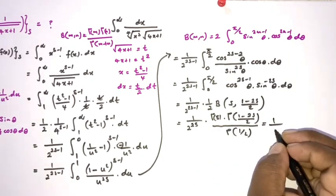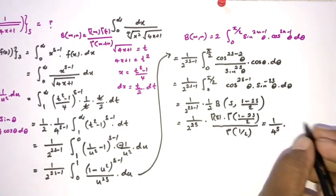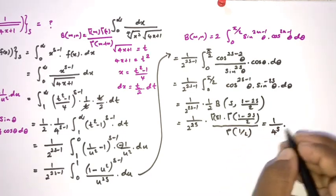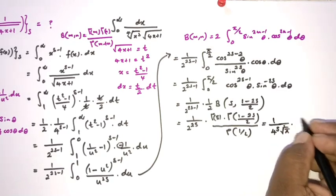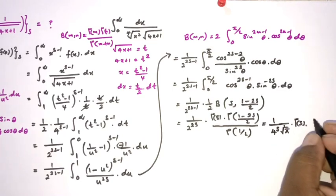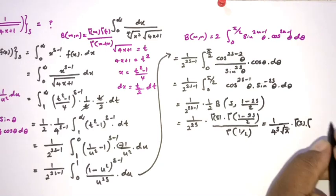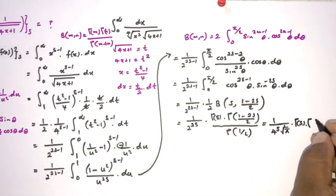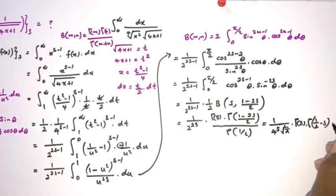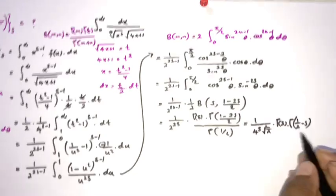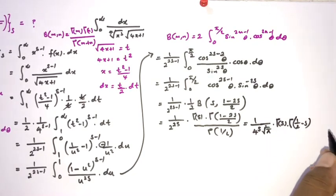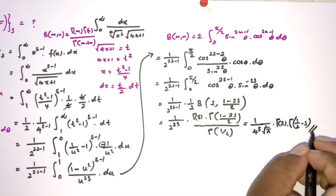Simplifying, we get 1 over 4 raised to the s, times Γ(1/2) which equals √π, times Γ(s) times Γ(1/2 − s) over Γ(1/2), giving the Mellin transform of 1 over square root of 4x plus 1 as: 1 over 4^s times √π times Γ(s) times Γ(1/2 − s).